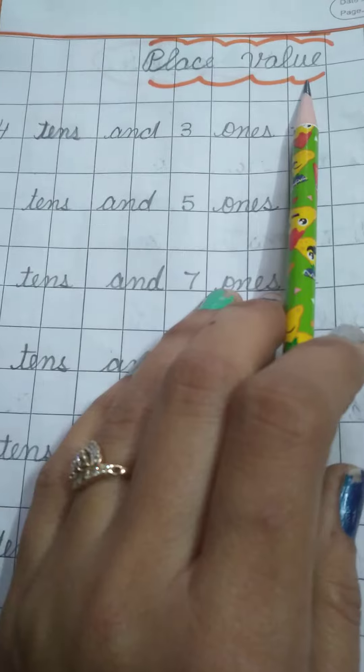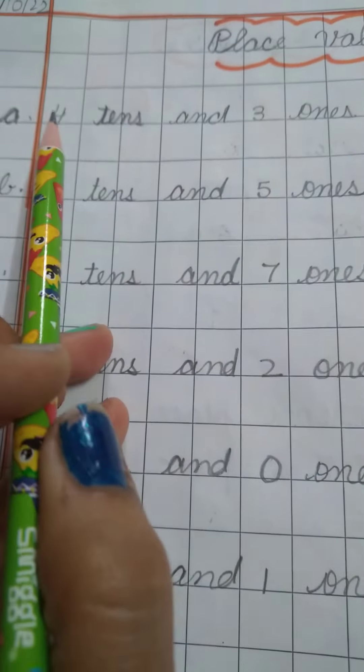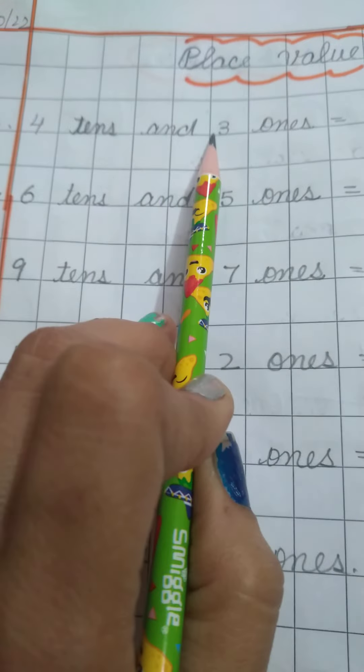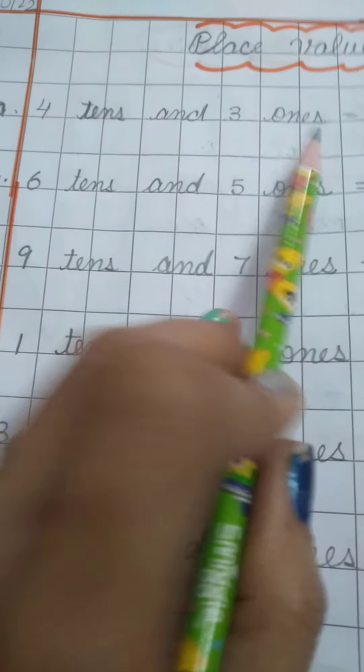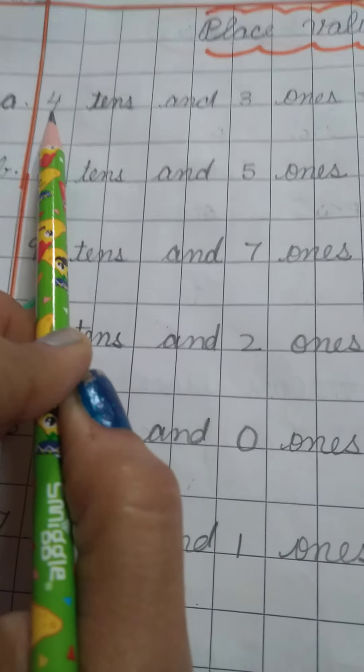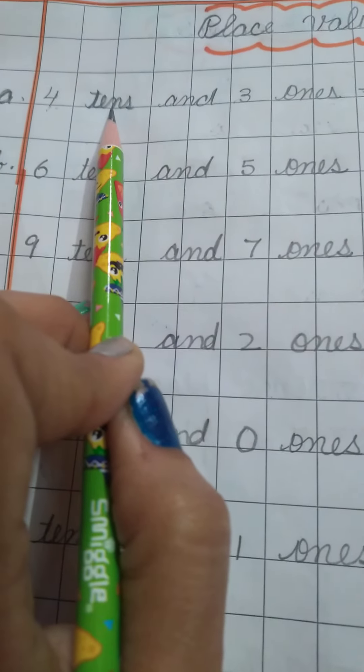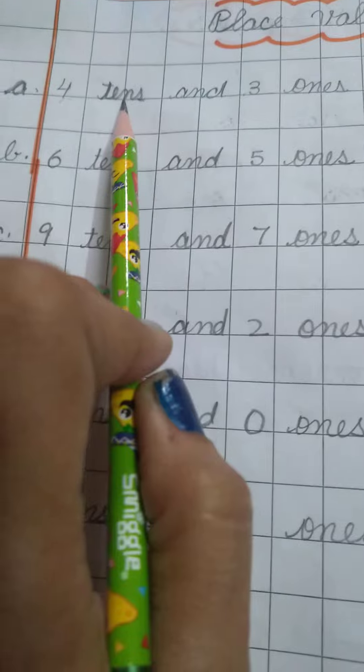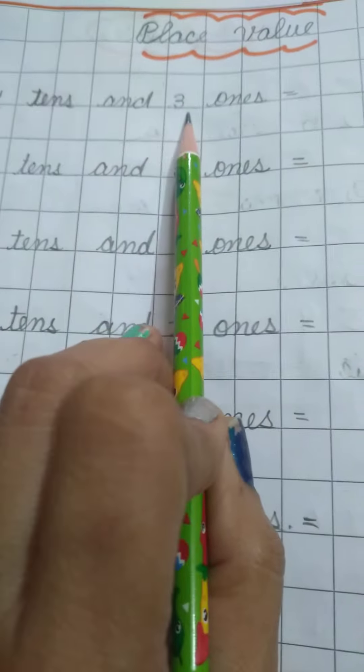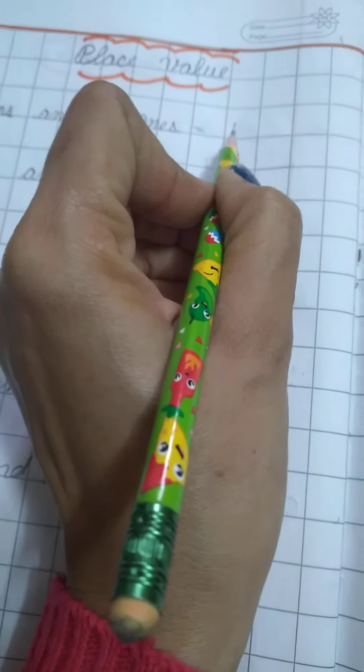Now see this exercise. First is 4 tens and 3 ones. Which number do we have in the tens place? 4. And how many ones we have? 3. So the answer will be 43.